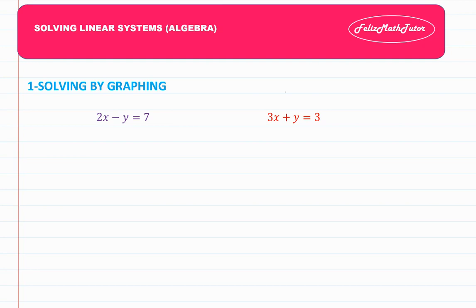The equations are 2x minus y equals 7 and 3x plus y equals 3. Let me remind you how we graph these two equations. We should find intercepts first. For finding the x-intercept of the purple equation, let's identify the x-intercept.